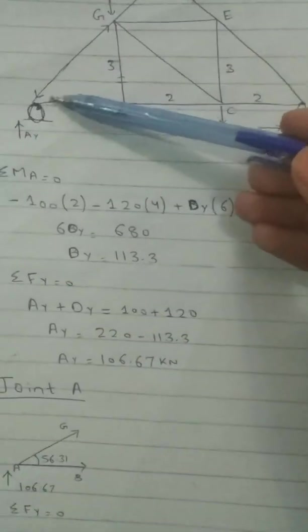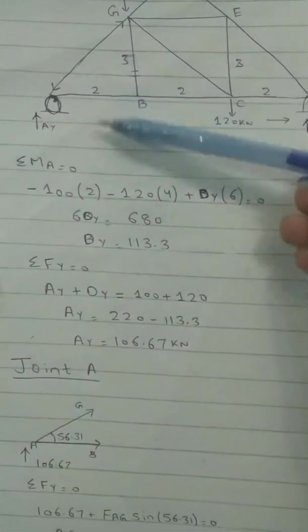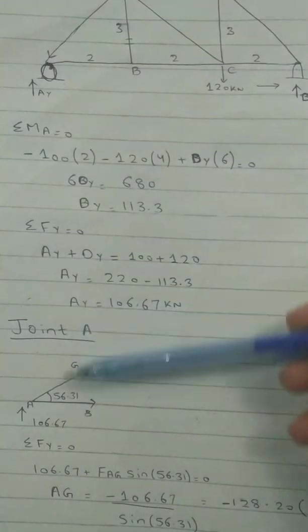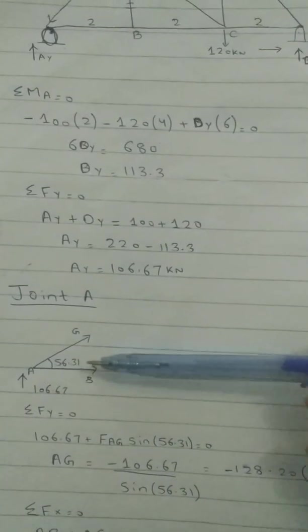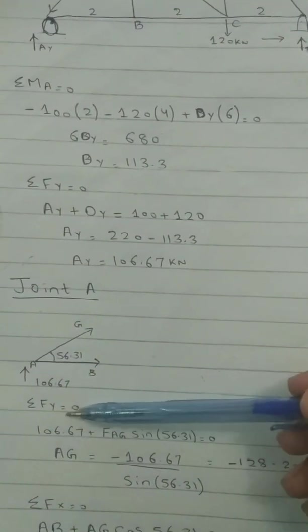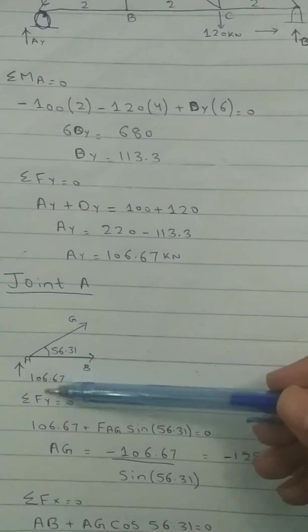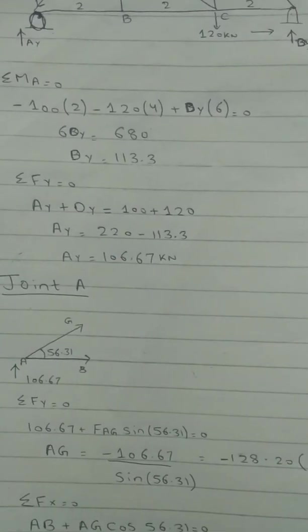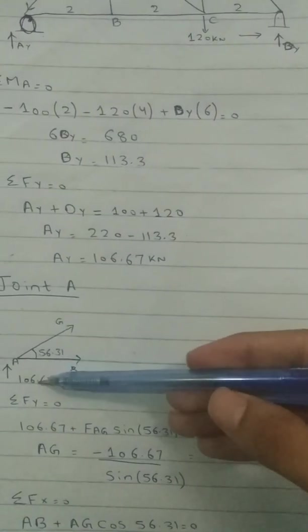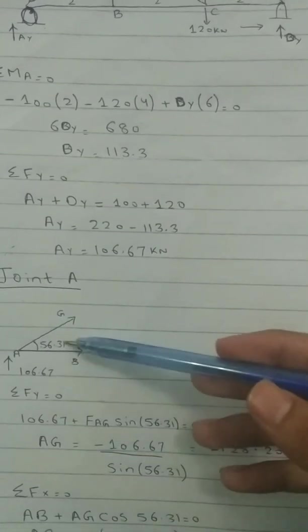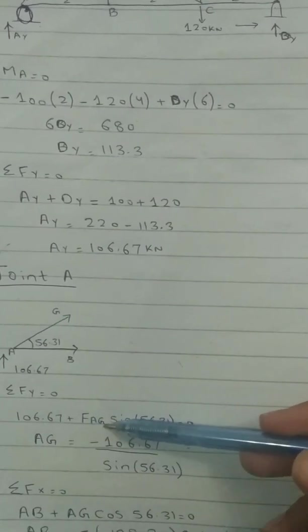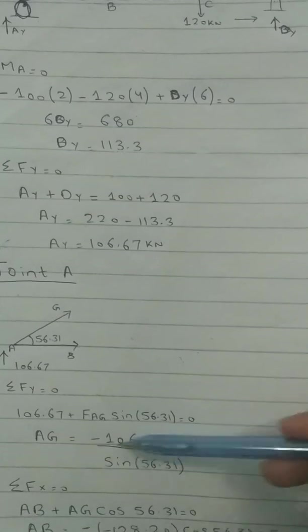And the angle can be calculated by using the tan inverse formula, tan theta formula. You can easily calculate 56.31. So sum of forces in y direction is equal to zero. The forces which are acting in y direction, this is the reaction force and this is AG.